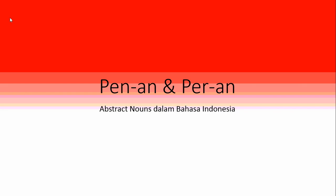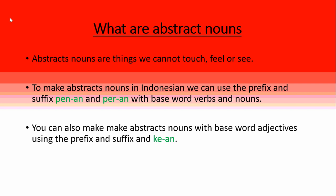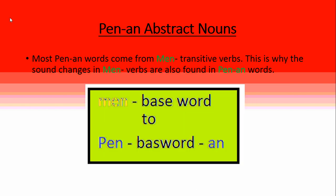Today's video is on pen-an and per-an abstract nouns in Indonesian. In other videos we've looked at abstract nouns with ke-an, but the per-an and pen-an abstract nouns can be quite difficult for learners. Abstract nouns are things we can't touch, feel, or see. To make abstract nouns in Indonesian we can use the prefix and suffix pen-an or per-an with base word verbs and nouns, or ke-an with base word adjectives.